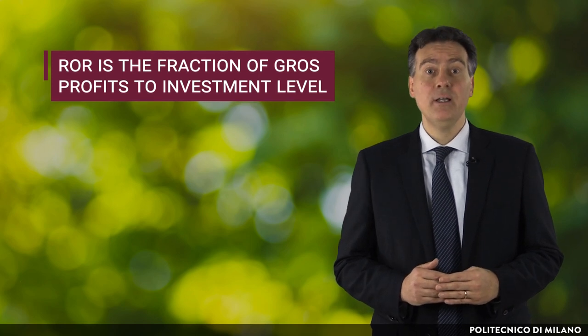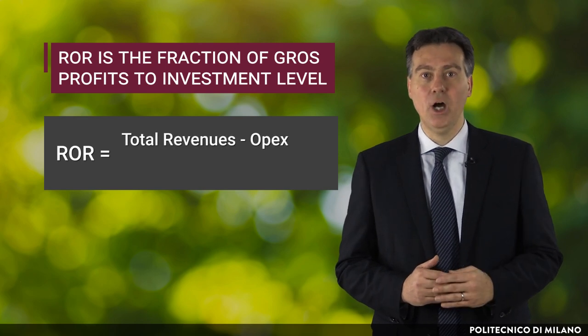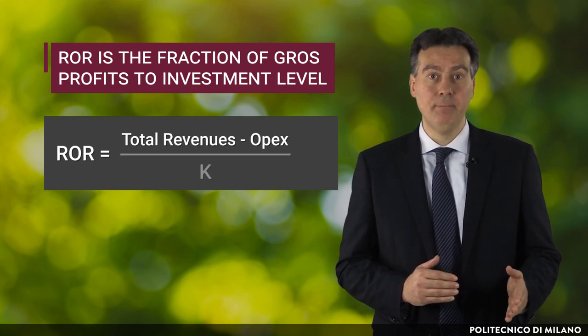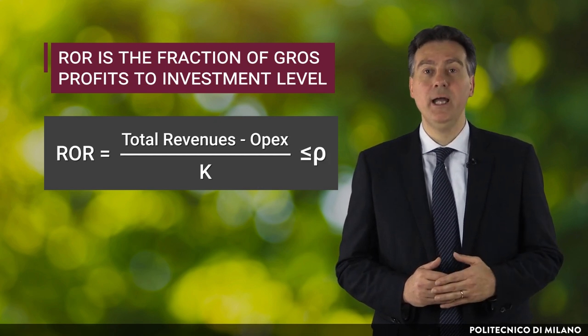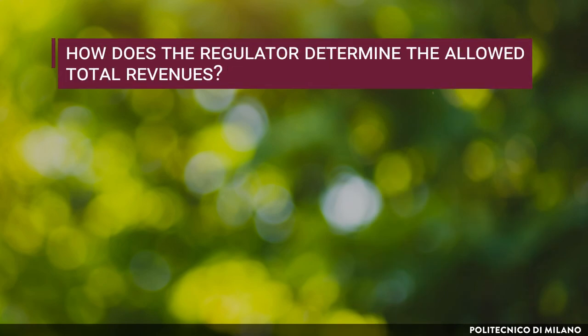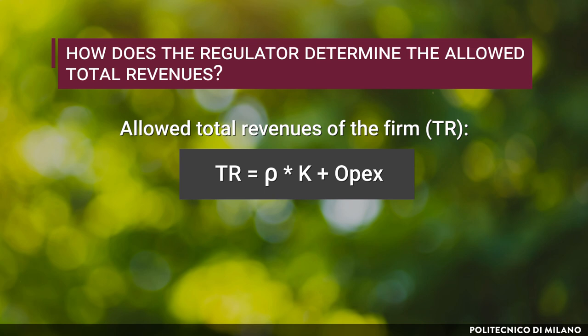The rate of return can be expressed with the following formula: revenues minus operating cost, scaled by capital investment, must be smaller than the maximum rate raw chosen by the regulator. The regulator determines the allowed total revenues by adding the value of capital expenditures — given by the amount invested multiplied by the maximum level raw — to the operating expenditures.